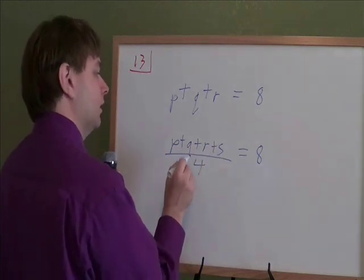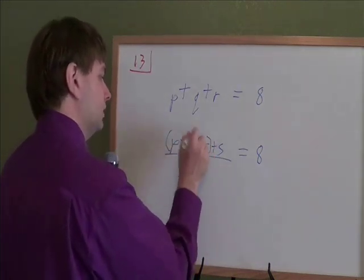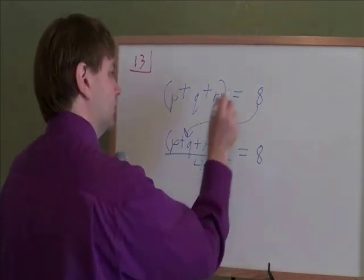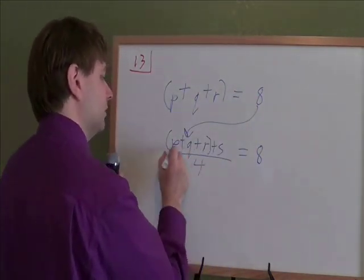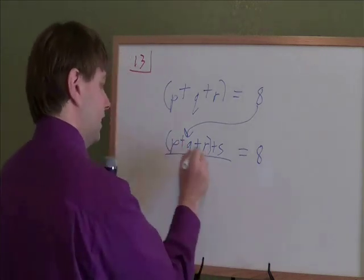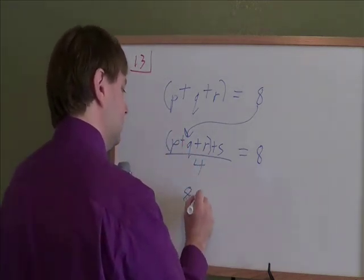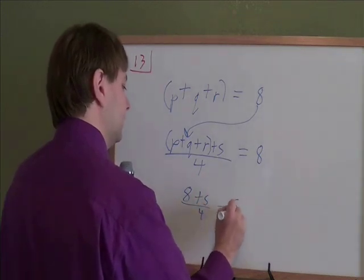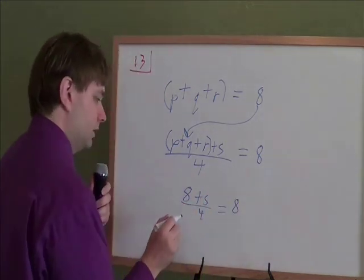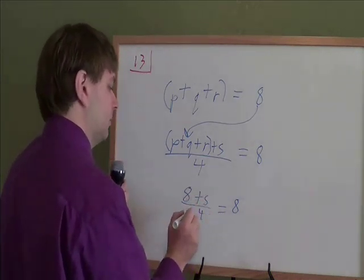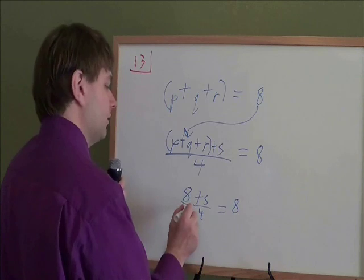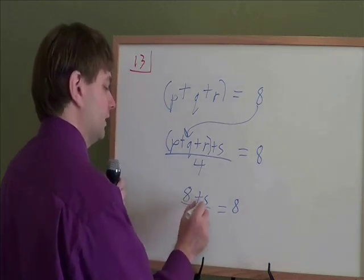So these are our two algebra equations, and now I just need to find out what that fourth number, what that S is. Well, we know P plus Q plus R has to be 8. So 8 replaces that whole piece of algebra there, everything in that parentheses. And we have 8 plus S divided by 4 equals 8. And from here, it's a pretty typical solve for your variable sort of problem. We've got 8 plus S divided by 4. The first thing we want to get rid of is get rid of this divide by 4, because it's affecting that whole side.